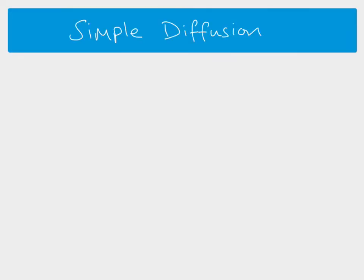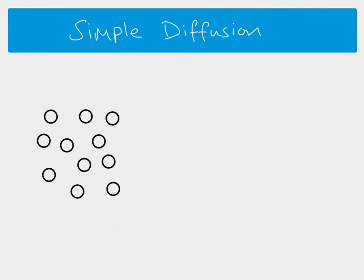This video is looking at diffusion. There are two kinds: simple diffusion and facilitated diffusion. Simple diffusion is where you have a high concentration of particles in one particular area and a lower concentration in another area. Diffusion refers to the movement of those particles from the area of high to the area of lower concentration.